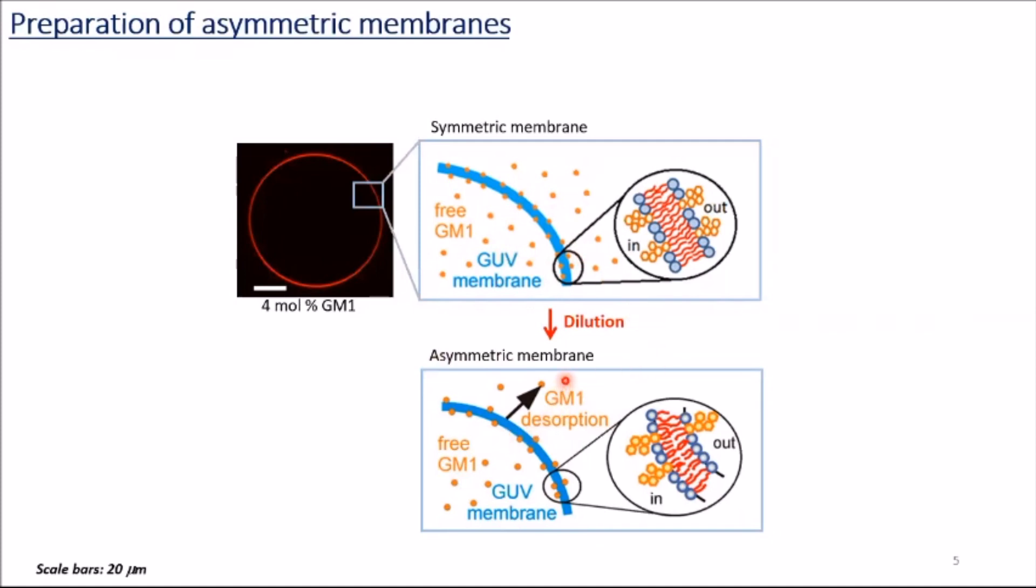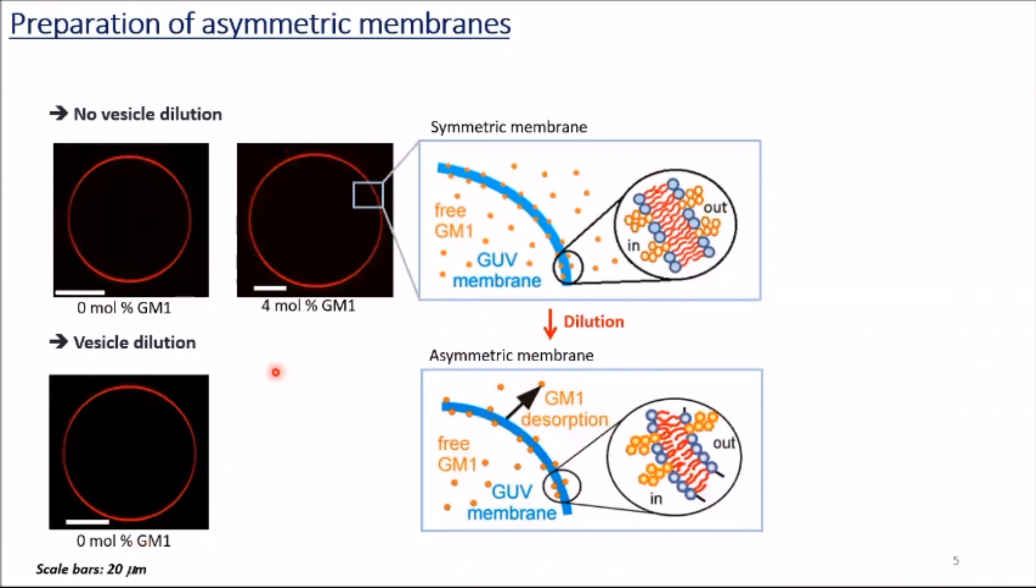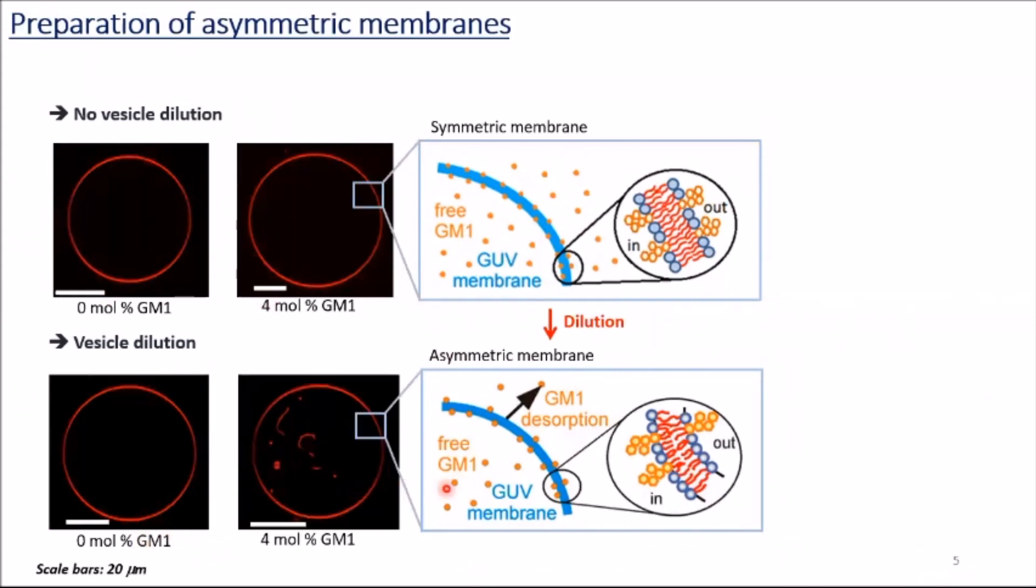GM1-free vesicles were used as a reference and dilution didn't cause any change. However, here, GM1 desorption from the outer leaflets created unequal GM1 distribution between the leaflets. Asymmetry was generated, membrane curved inwards, and formed internal tubes.